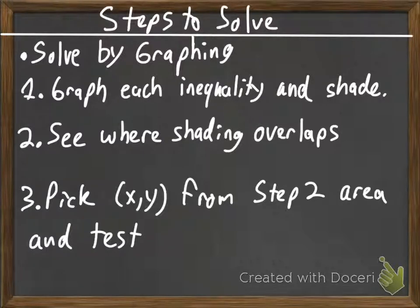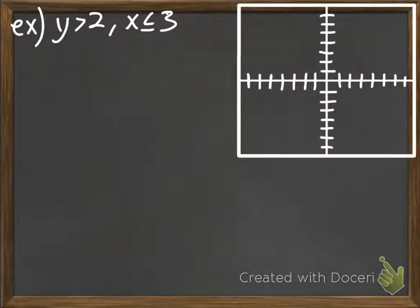So let's go ahead and go through an example. So we have y greater than 2 and x is less than or equal to 3. So start with y greater than 2. I'm going to do that in red. So greater than means that it is a dotted line. So we have our dotted line at y at 2. And y greater than 2, we pick (0,0) to test.